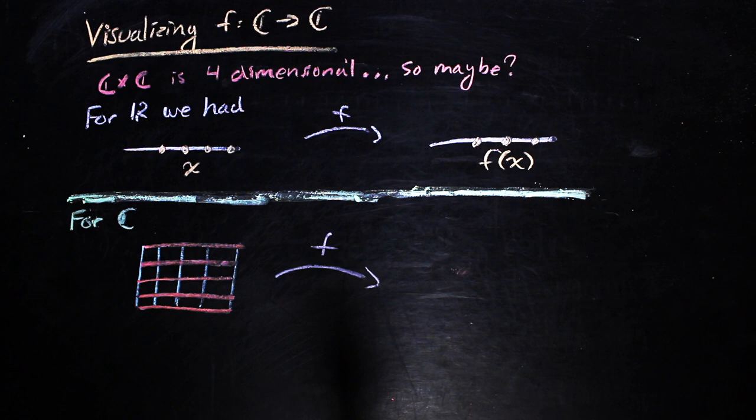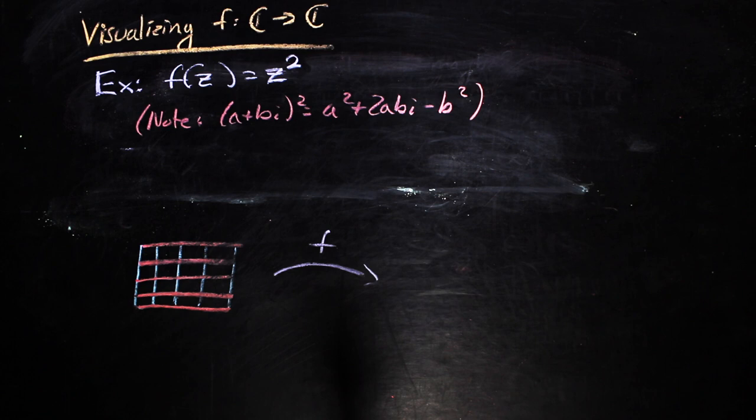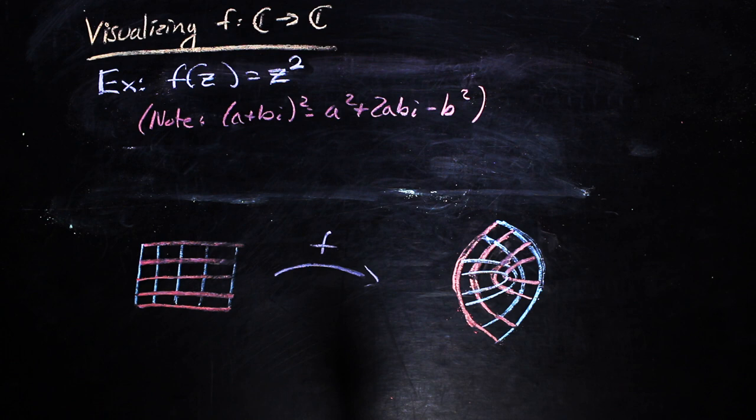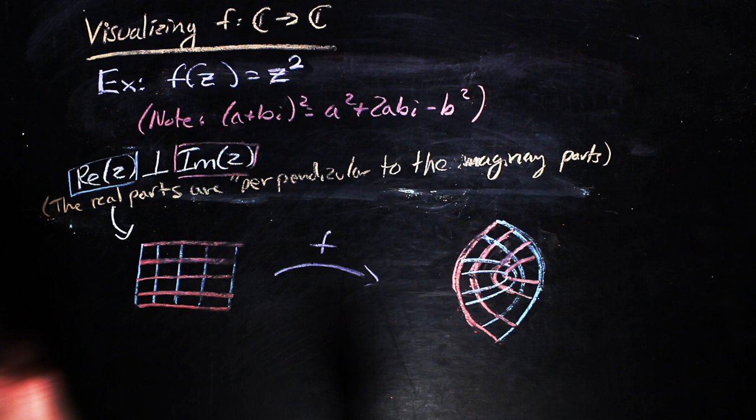So, for example, we consider the function f of z is equal to z squared. Notice that for a complex number, a plus bi, f of a plus bi would be a squared plus 2abi minus b squared. So, after a bit of computation, we get the following image. Notice that geometry arises in a natural way from analysis of these maps. That is, the grid lines have a really simple geometric structure. The real grid lines are perpendicular to the imaginary grid lines.